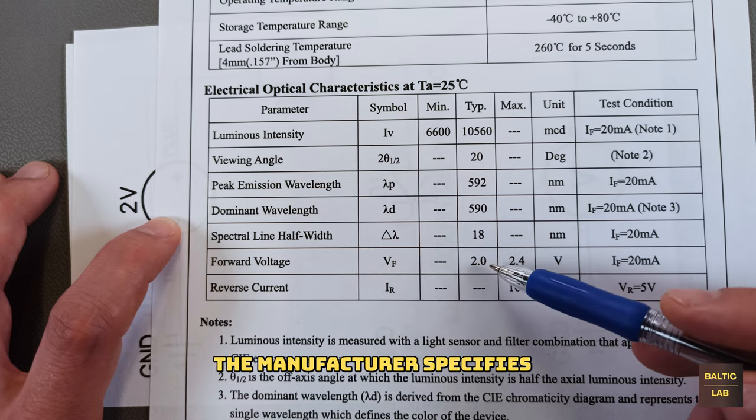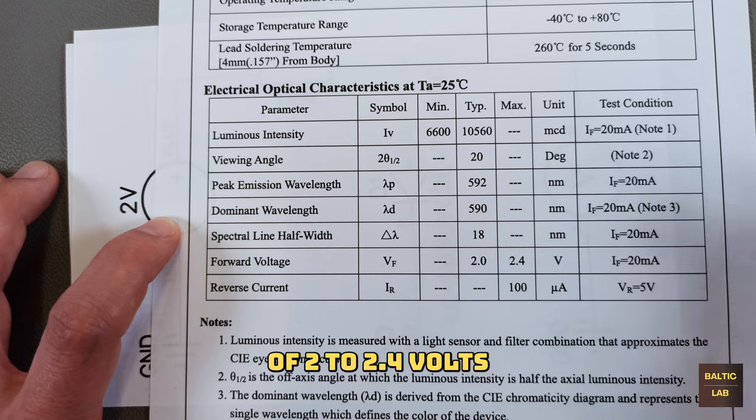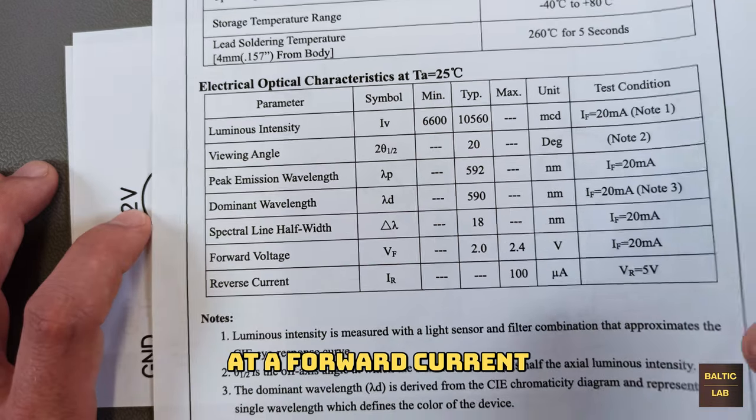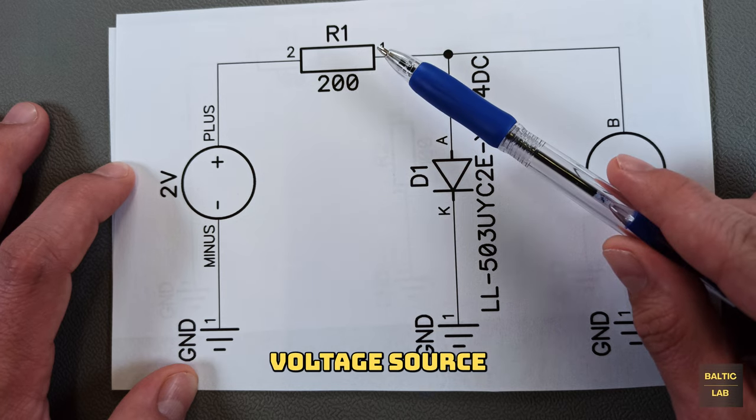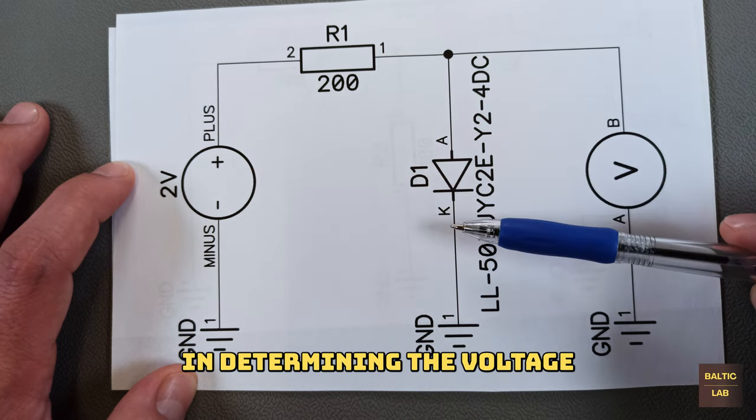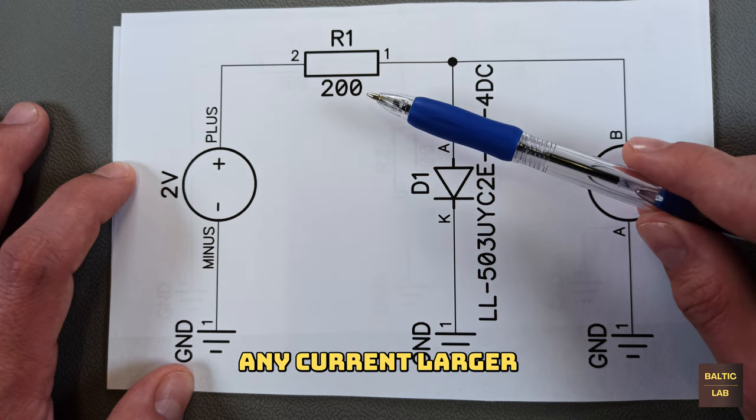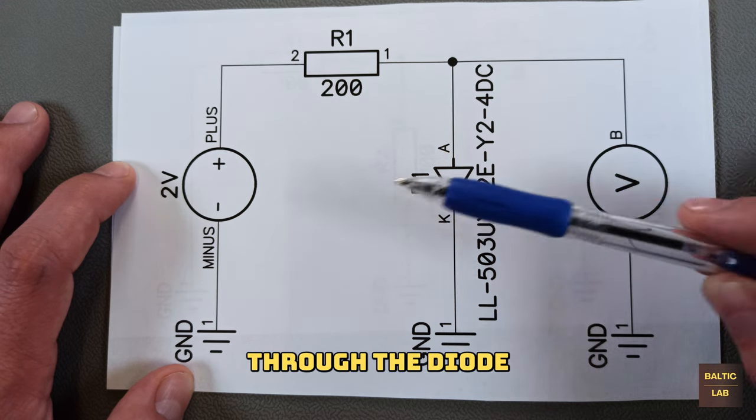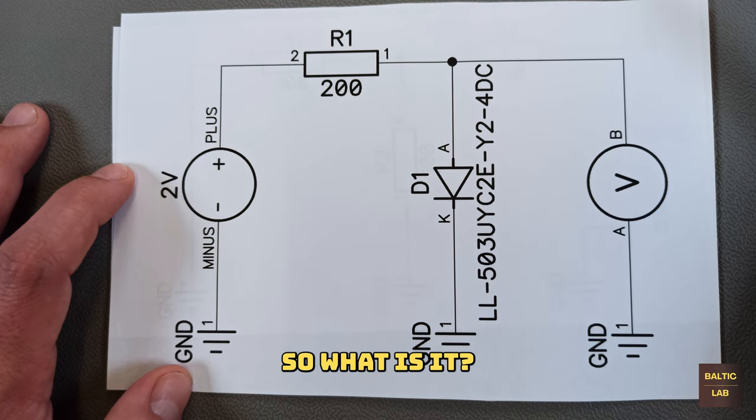But back to the problem at hand, the manufacturer specifies a forward voltage of 2 to 2.4 volts at a forward current of 200 milliamps. Looking at our equivalent voltage source this doesn't help us at all in determining the voltage across the diode D1. Assuming that any current larger than zero is flowing through the diode the voltage has to be less than 2 volts. So what is it?